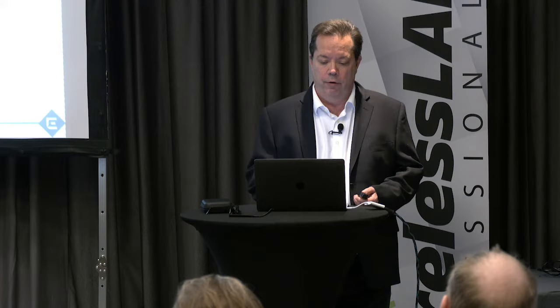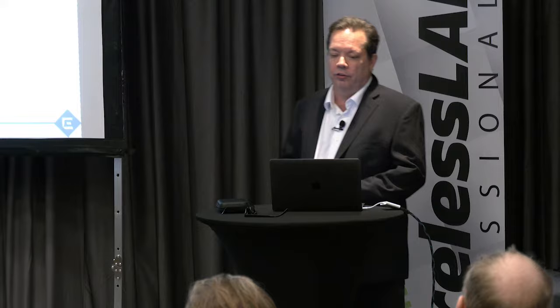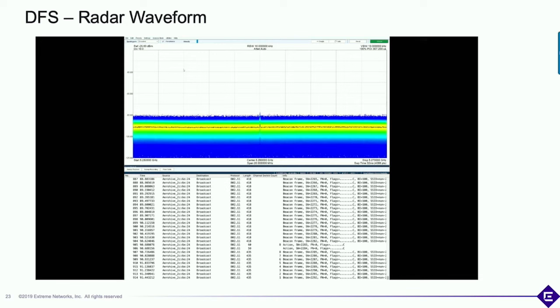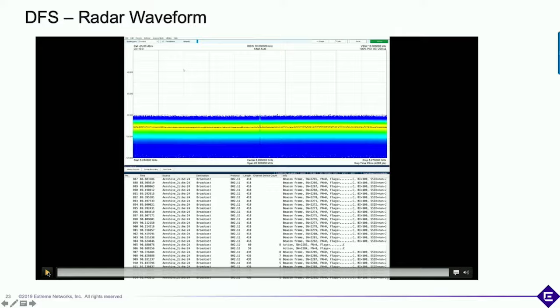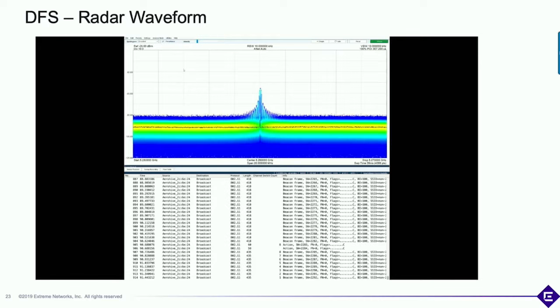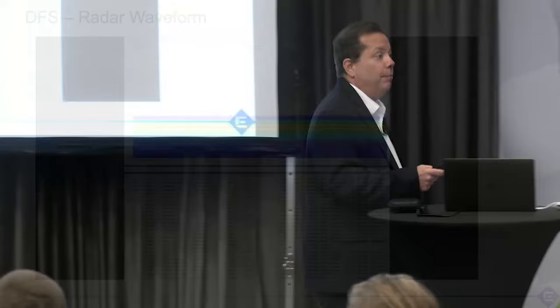Let's look at a radar waveform right here — I have a spectrum analyzer capture. You can see a channel transmitting, and just wait for it... you're going to see a radar pulse on this DFS channel. There's the pulse — boom. Notice the Wi-Fi channel disappeared. That's because it had to move to a different channel. Let me play that one more time: there's the channel transmitting, there's the short radar burst, and the Wi-Fi channel disappears. That's the AP telling the clients they have to move.